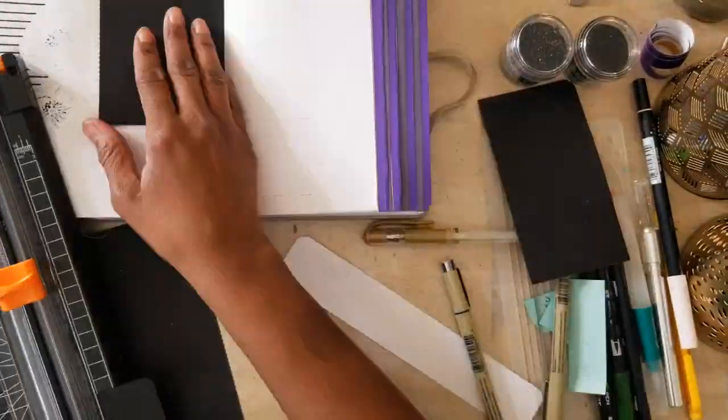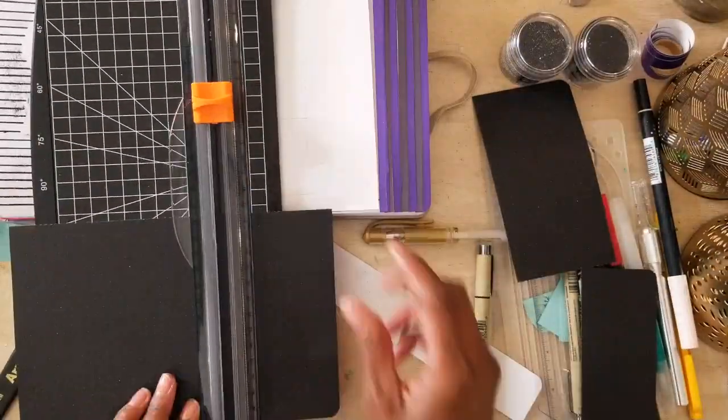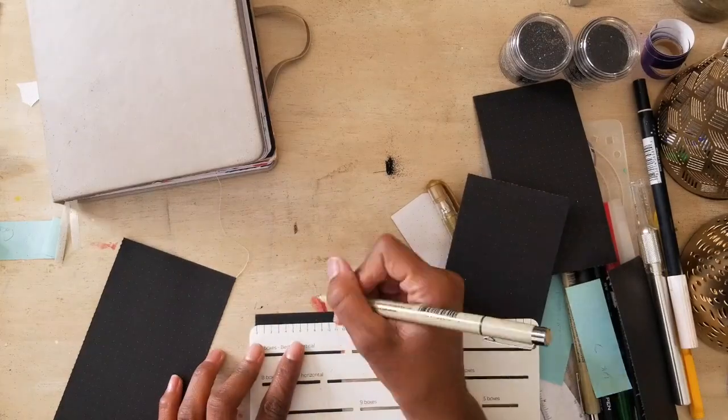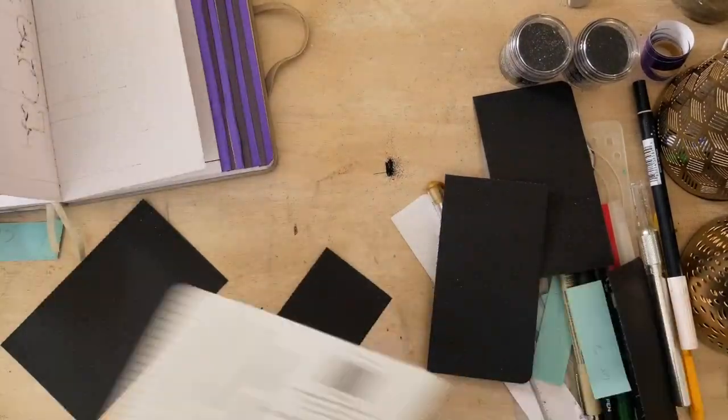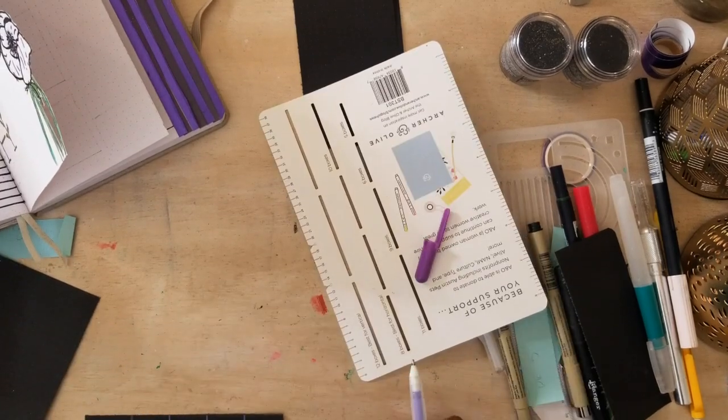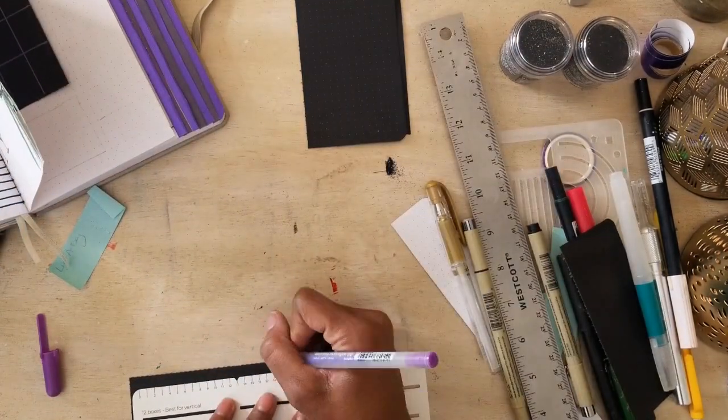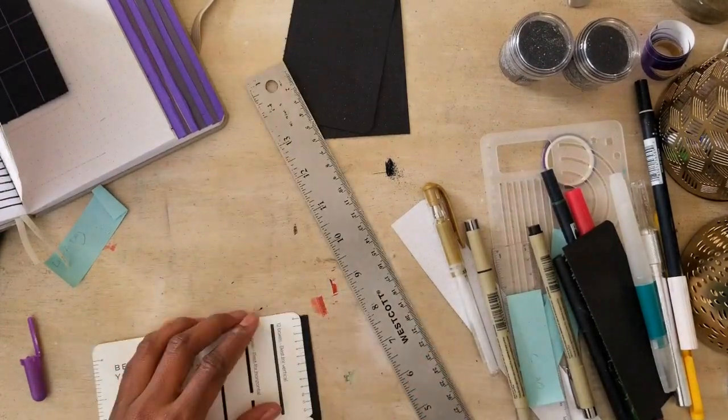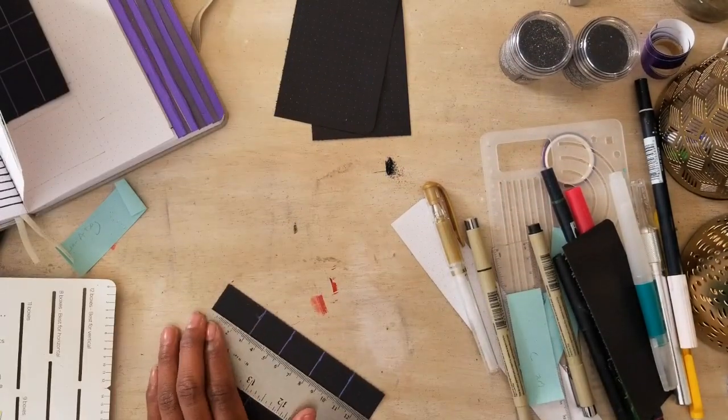All right. So I purchased the Archer & Olive tool for bullet journaling, creating boxes and tabs. And I just wanted to try it out. So if you have been thinking about it, this is a great tool to purchase. It had been part of a freebie. And then it was available for purchase on the site. I'm not sure if it's still there. If it is, I'll leave a link in the description box.